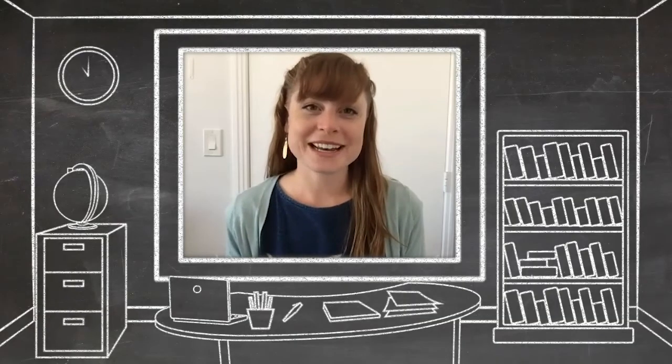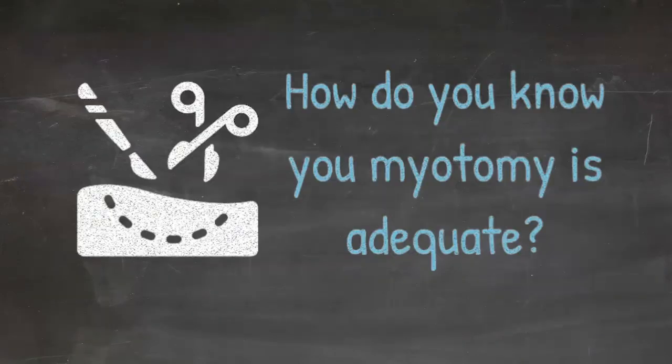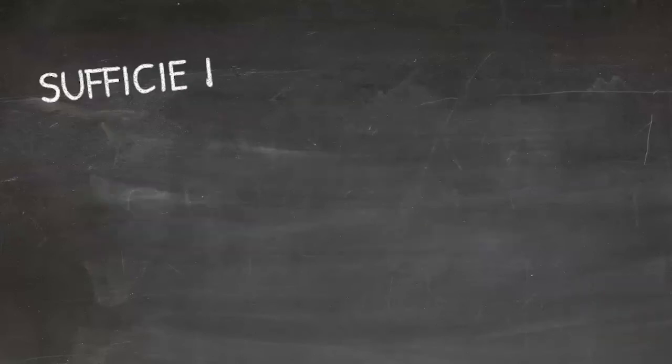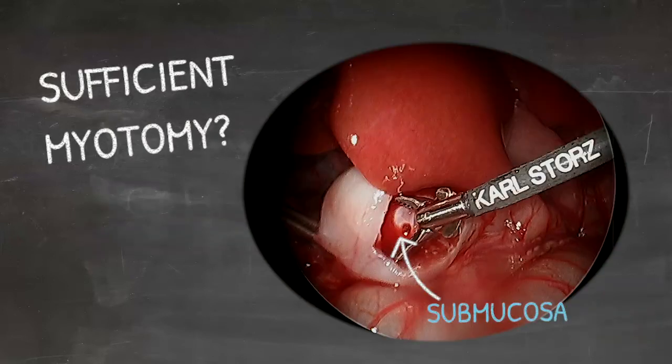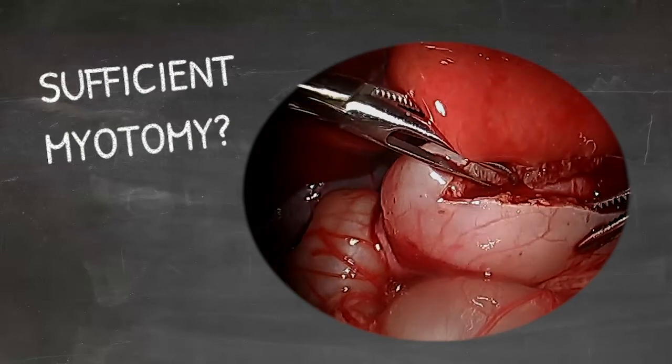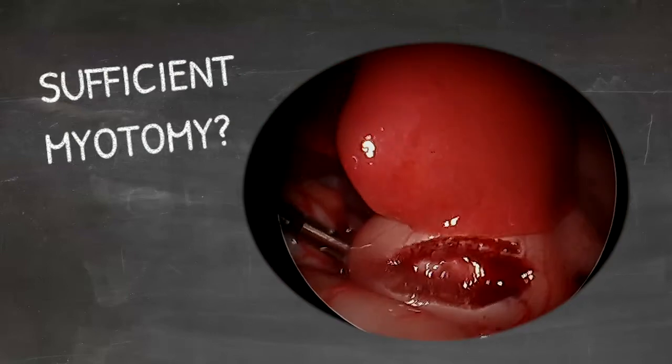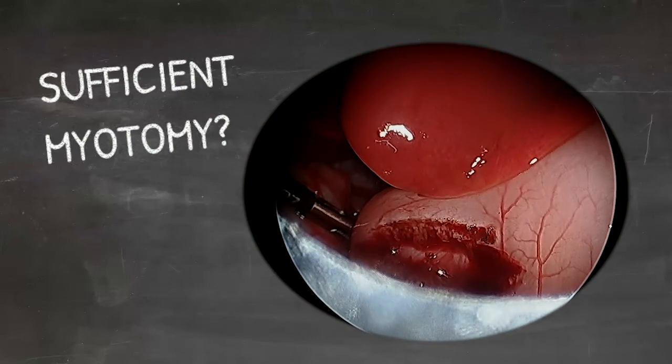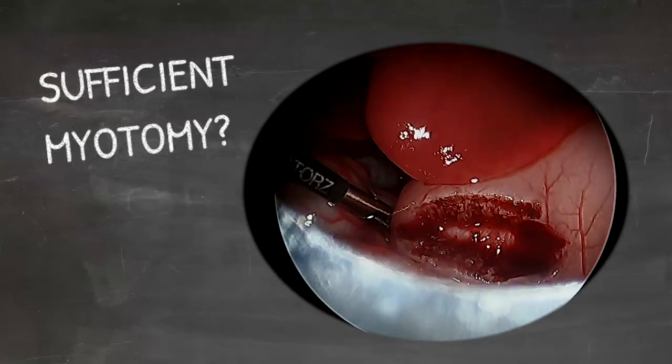How do you know your myotomy is adequate? After the pyloromyotomy is completed, you notice the submucosa bulge into the myotomy site. Each side of the pylorus should move independently. You can also insufflate air through the NG tube and see the mucosal bulge and the air pass into the first part of duodenum.